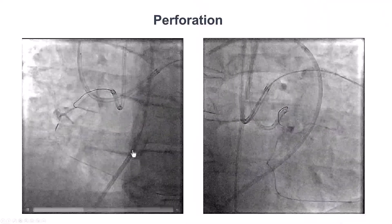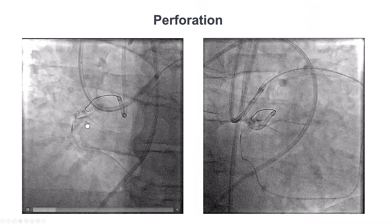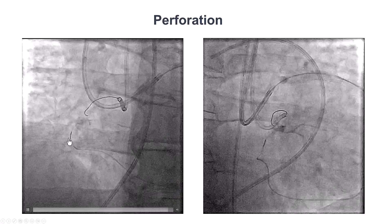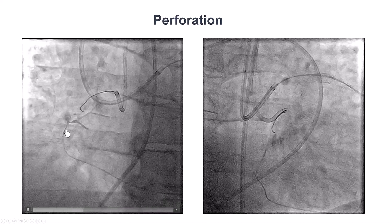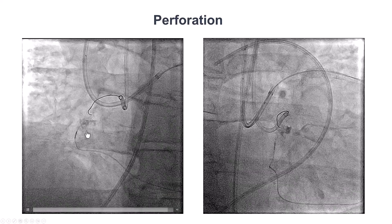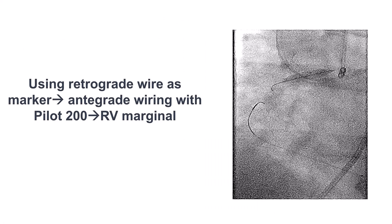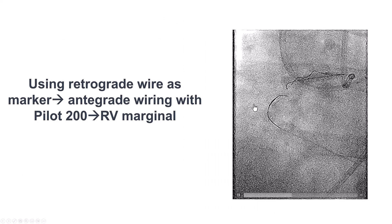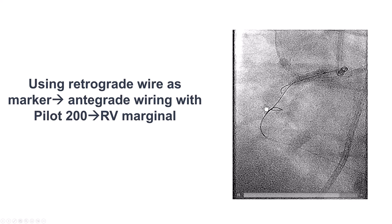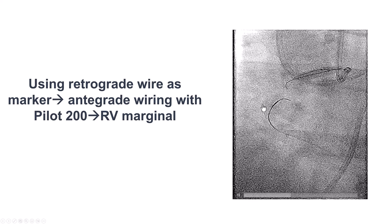We did another distal tip injection and unfortunately there is some staining at the distal cap — we have a small wire perforation distally. Fortunately, we had not advanced the microcatheter further down, and we can see the contrast is remaining in that segment of the vessel. We ended up leaving the retrograde wire as a marker, not wanting to perform too many crossing attempts given the distal wire perforation.